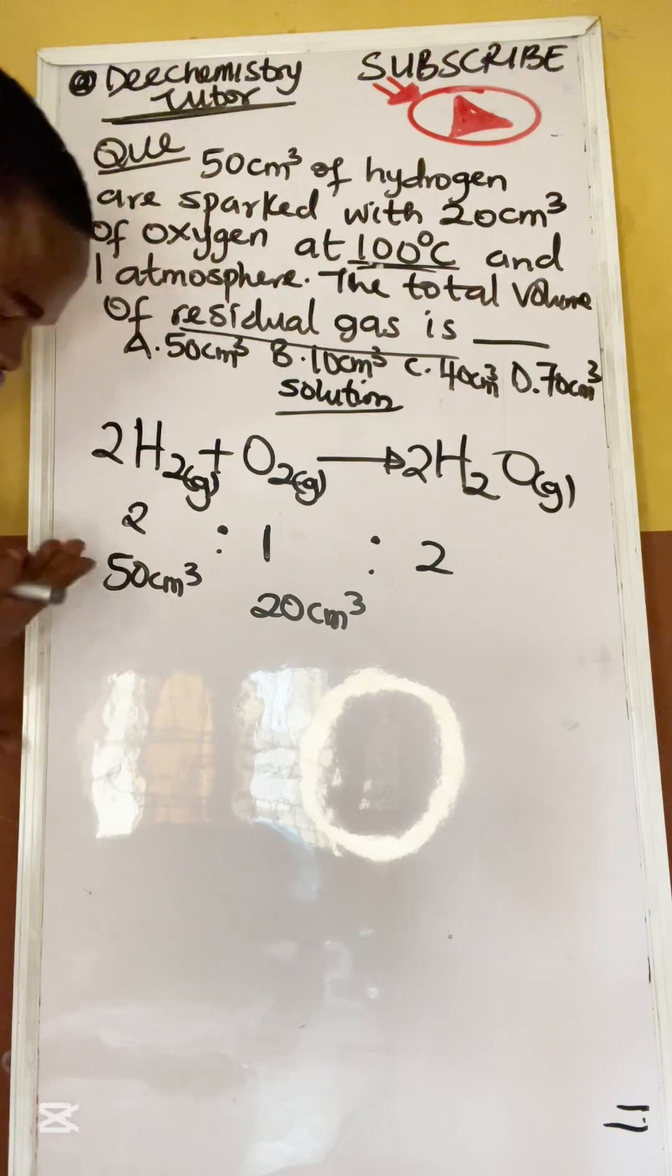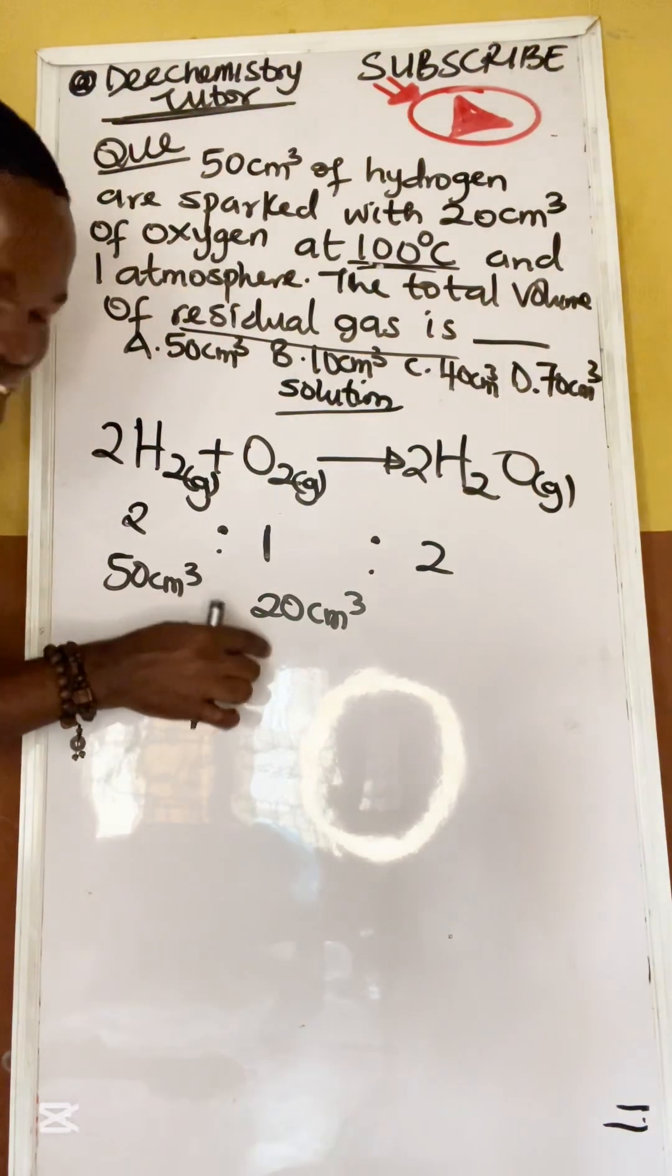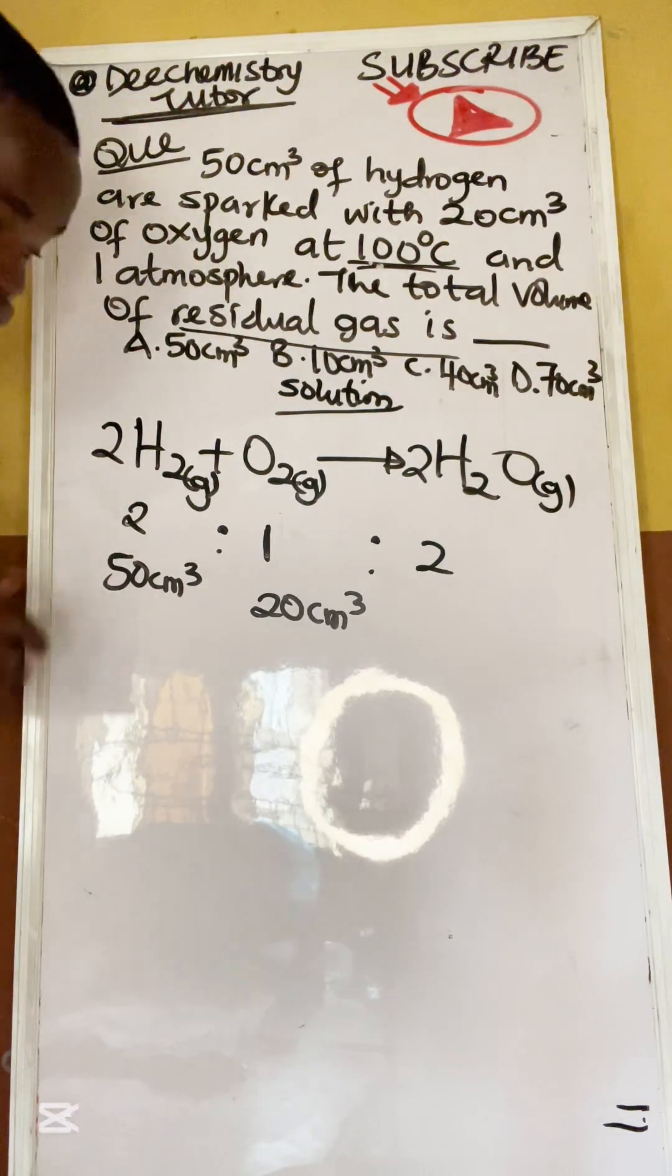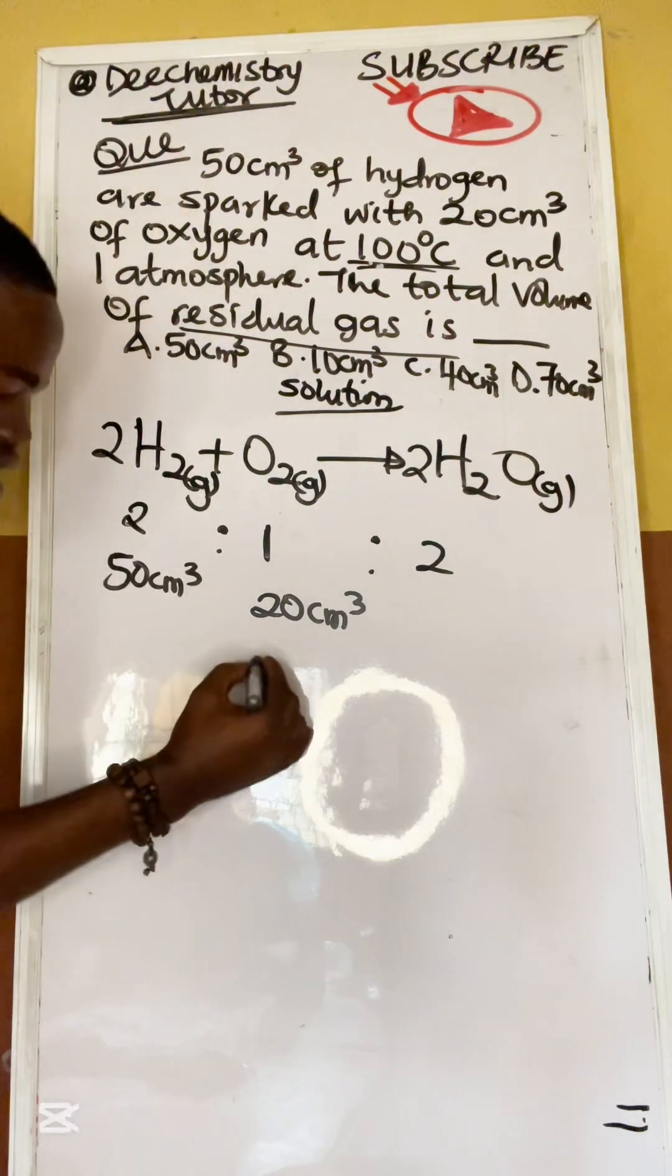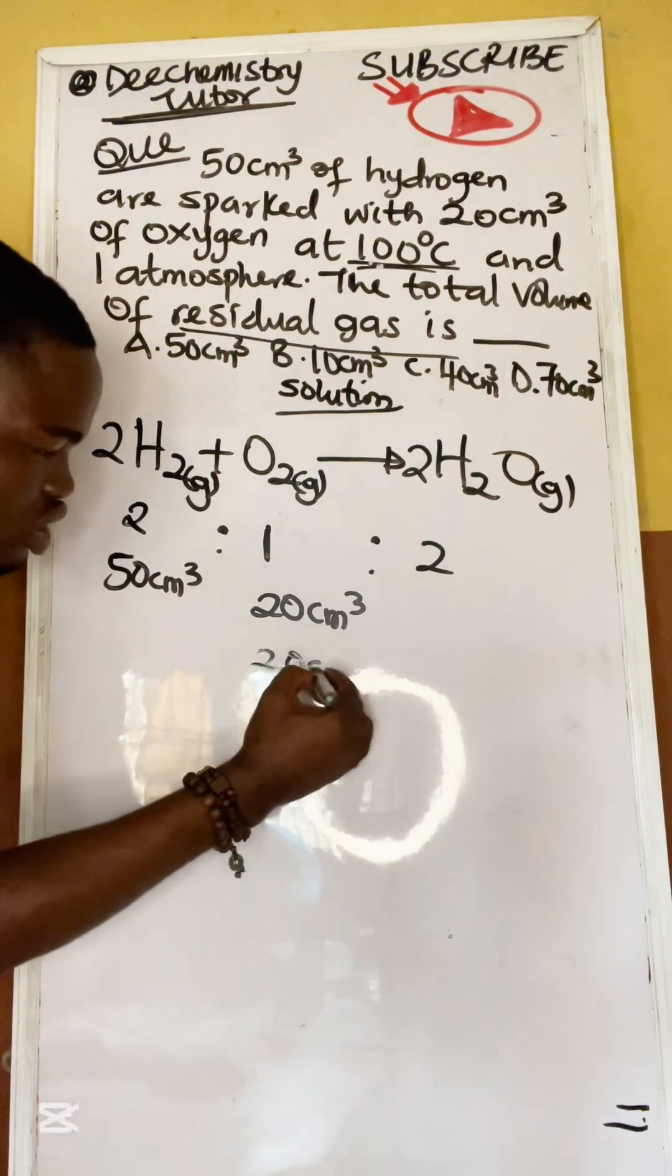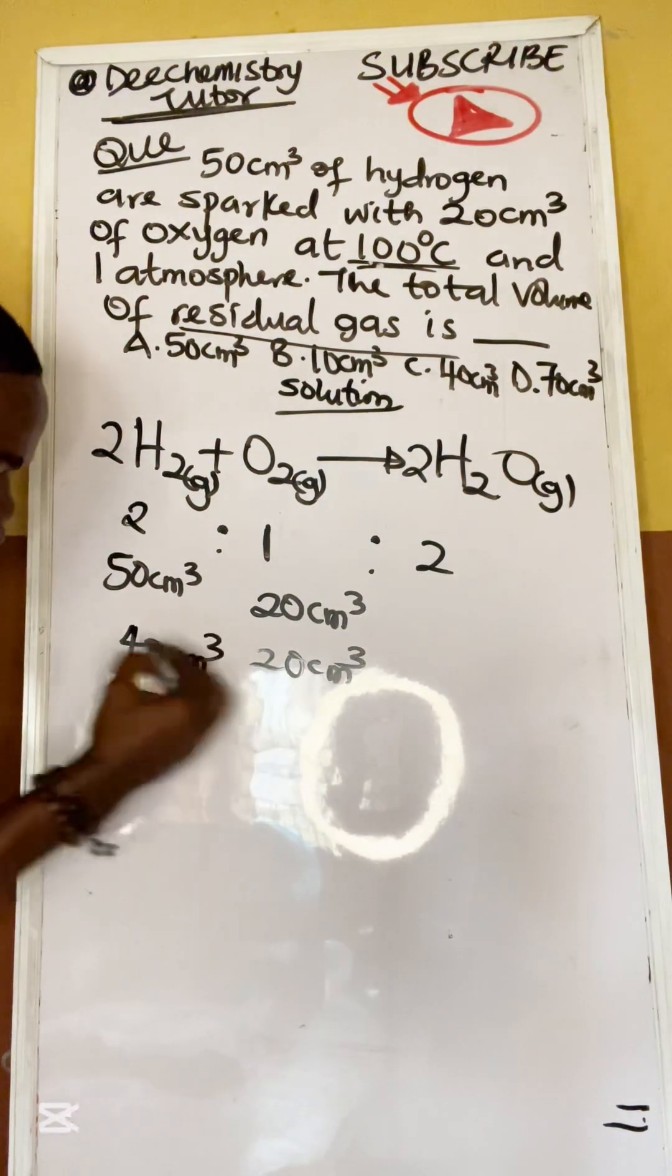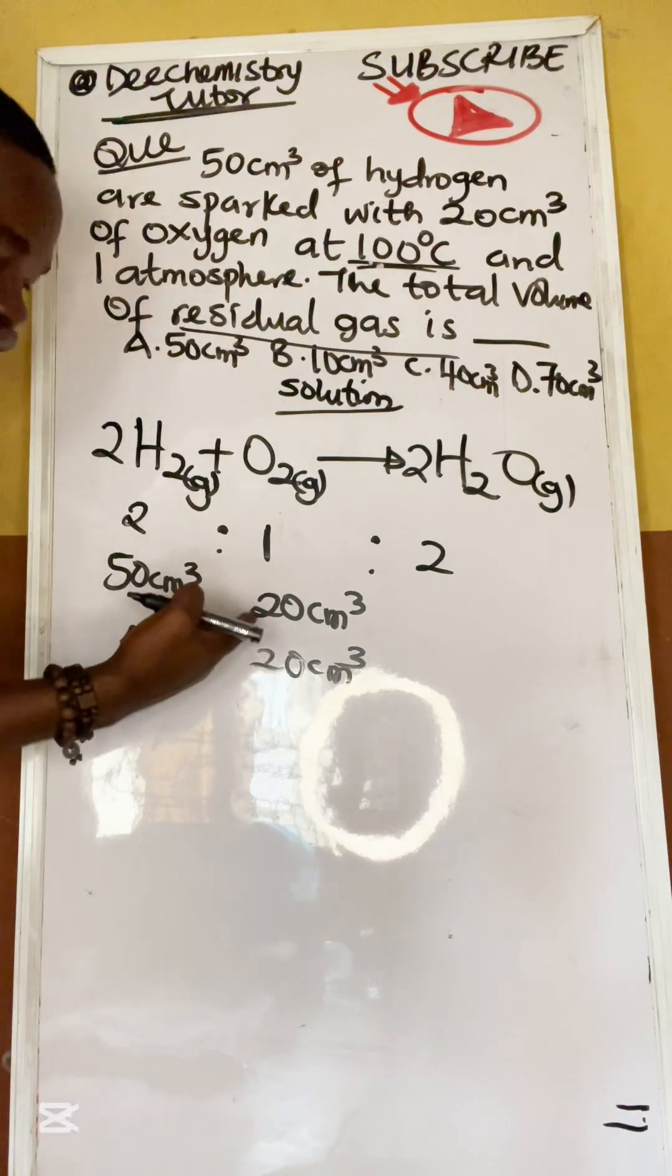Yes, it makes sense. If you are just given 50, that means you are given in excess. So this oxygen here is the limiting reagent. While this one is the excess reagent. I don't want to bore you with that. Let me just move on with this question. But just take note of that again.